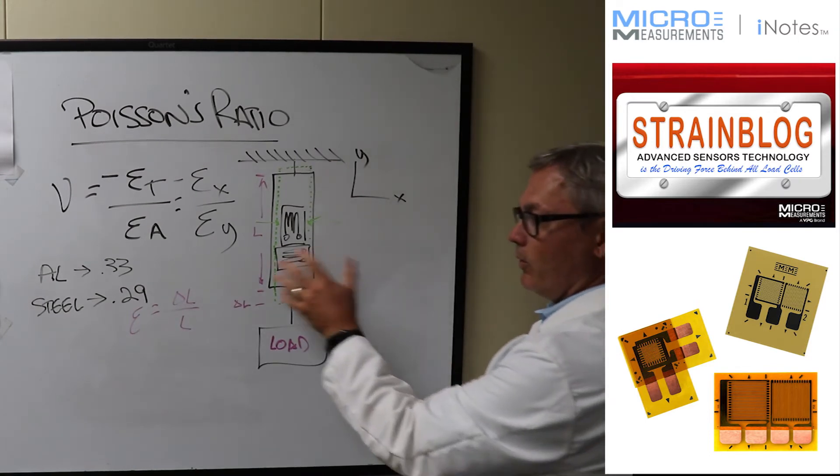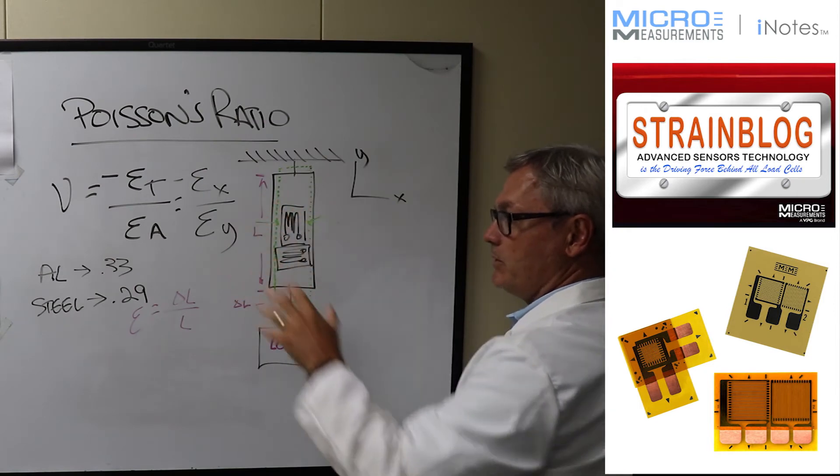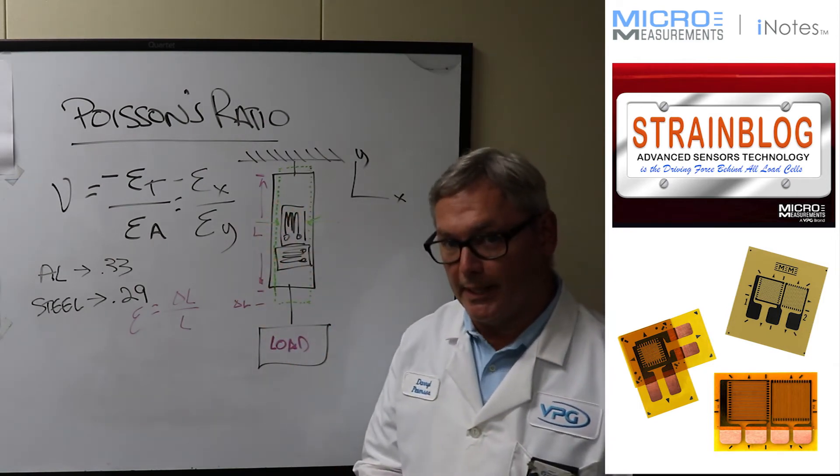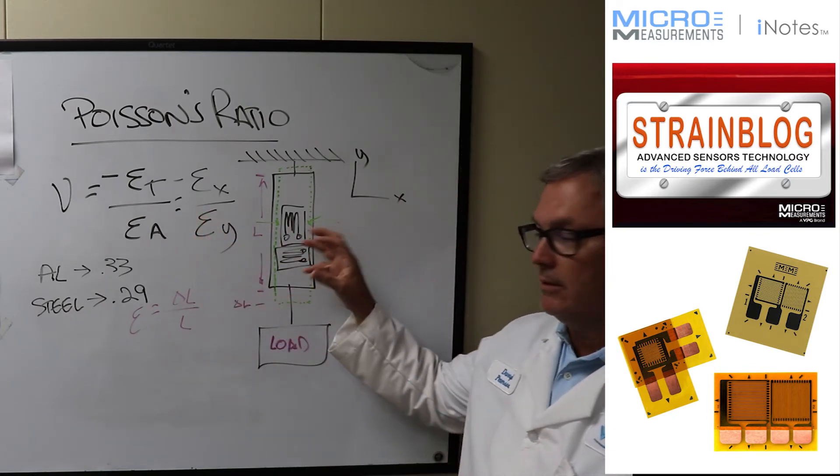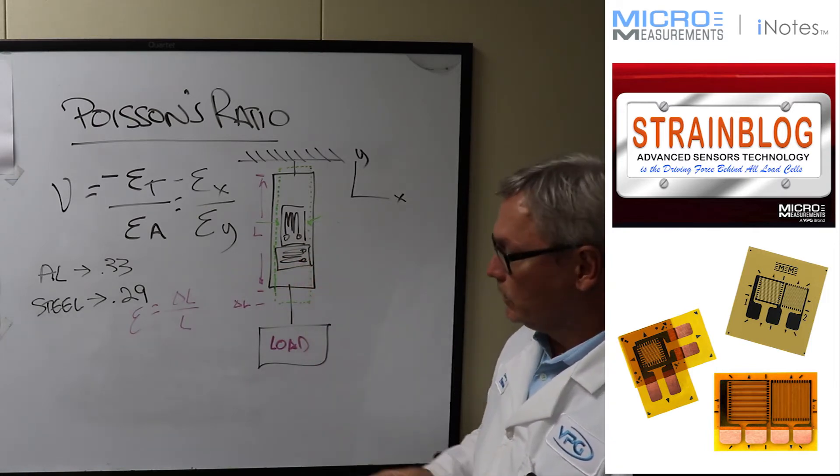Now the reason it's important relative to strain gauges is that this gives you the ability to establish material properties. Maybe you're working on a new composite or a new plastic and you're trying to establish these material properties, this gives you a method to be able to do that. The strain gauges will give you a method to be able to do it.